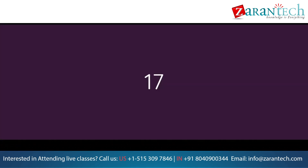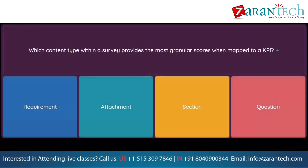Question. Which content type within a survey provides the most granular scores when mapped to a KPI? Option 1: Requirement. Option 2: Attachment. Option 3: Section. Option 4: Question.